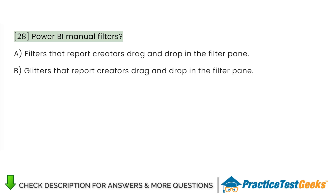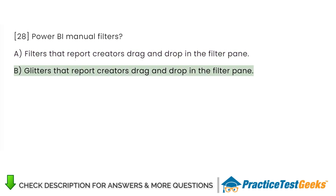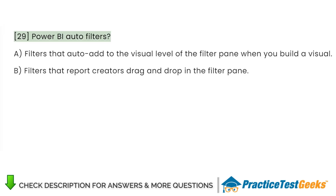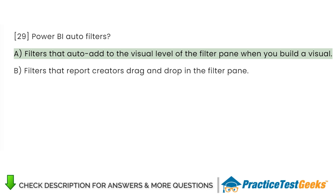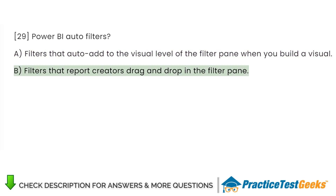Power BI Manual Filters: A. Filters that report creators drag and drop in the filter pane. Power BI Auto Filters: A. Filters that auto-add to the visual level of the filter pane when you build a visual. B. Filters that report creators drag and drop in the filter pane.